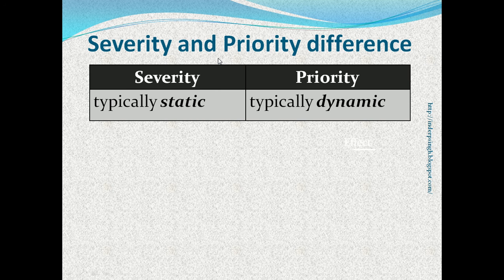Another way to understand the difference: severity is an objective quality of the bug — it is static, meaning it does not change. Priority is a subjective quality of the bug — it is dynamic, because priorities of bugs may be changed based on changing situations in the project.